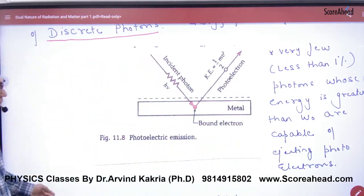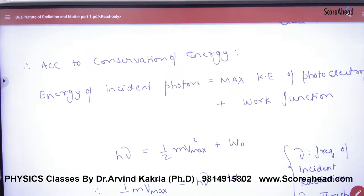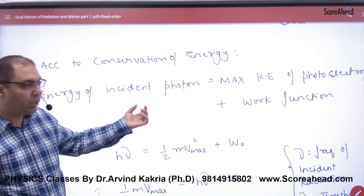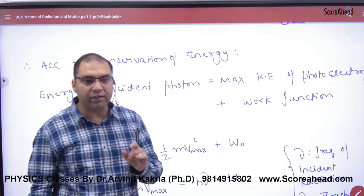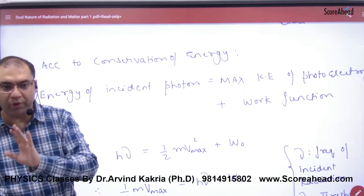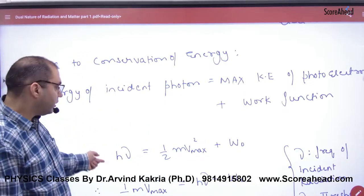According to conservation of energy, Einstein said that the energy of the incident photon is equal to the work function plus the maximum kinetic energy of the photoelectron.